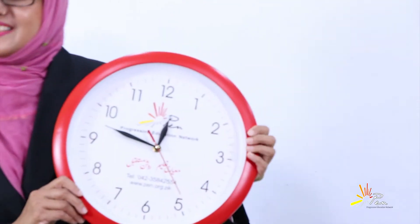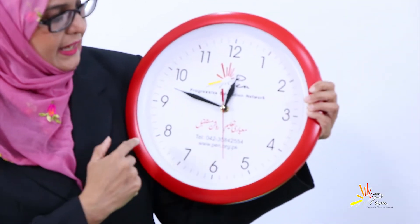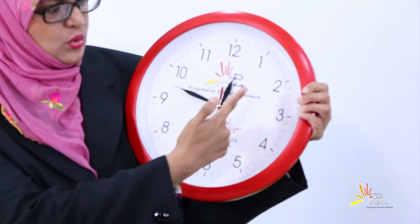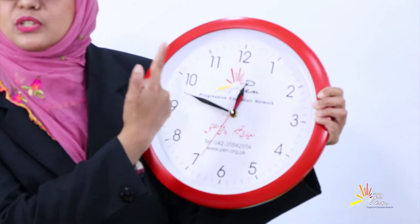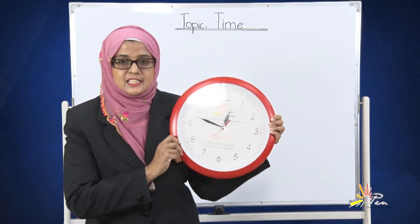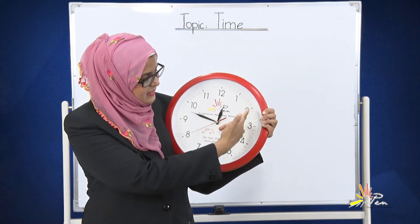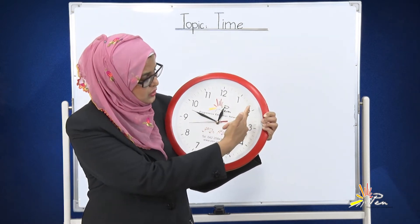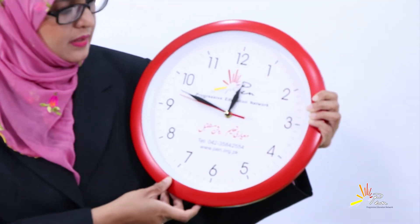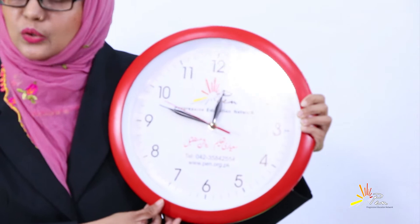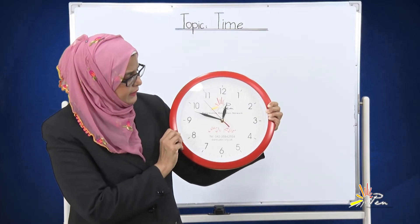You can see the numbers on this wall clock. This clock has 12 numbers: 1, 2, 3, 4, 5, 6, 7, 8, 9, 10, 11, 12. The whole clock is divided into 12 numbers and 60 parts. These small lines show the parts. This clock is divided into 60 equal parts.